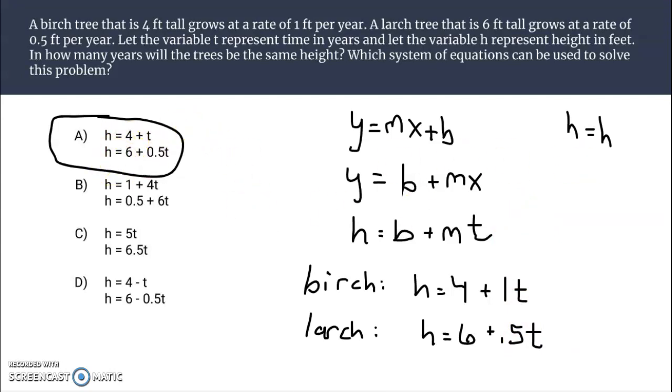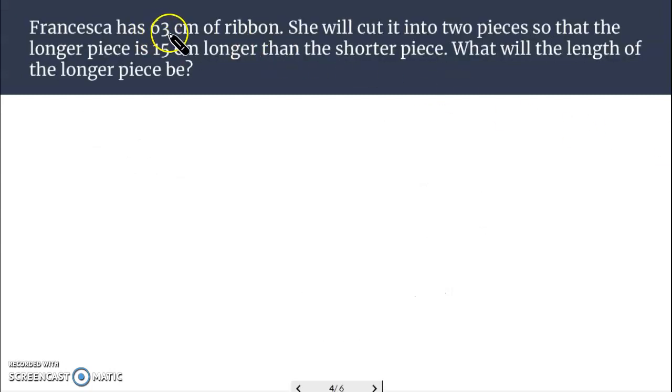Now, in this next one, we're actually going to set up the system, and then we will solve it. So, Francesca has 63 centimeters of ribbon. She'll cut it into two pieces so that the longer piece is 15 centimeters longer than the shorter piece. What will the length of the longer piece be? All right, let's have x be the shorter piece. Let's have y be the longer piece.